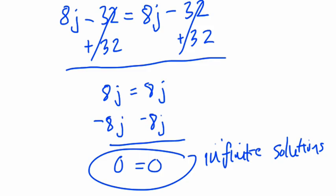If you've got something like 1 equals 2, which is never true, that means there are no solutions. Otherwise, if you remember, you just solve for a variable. You get j equals 2, or j equals 3, which means there's one solution.